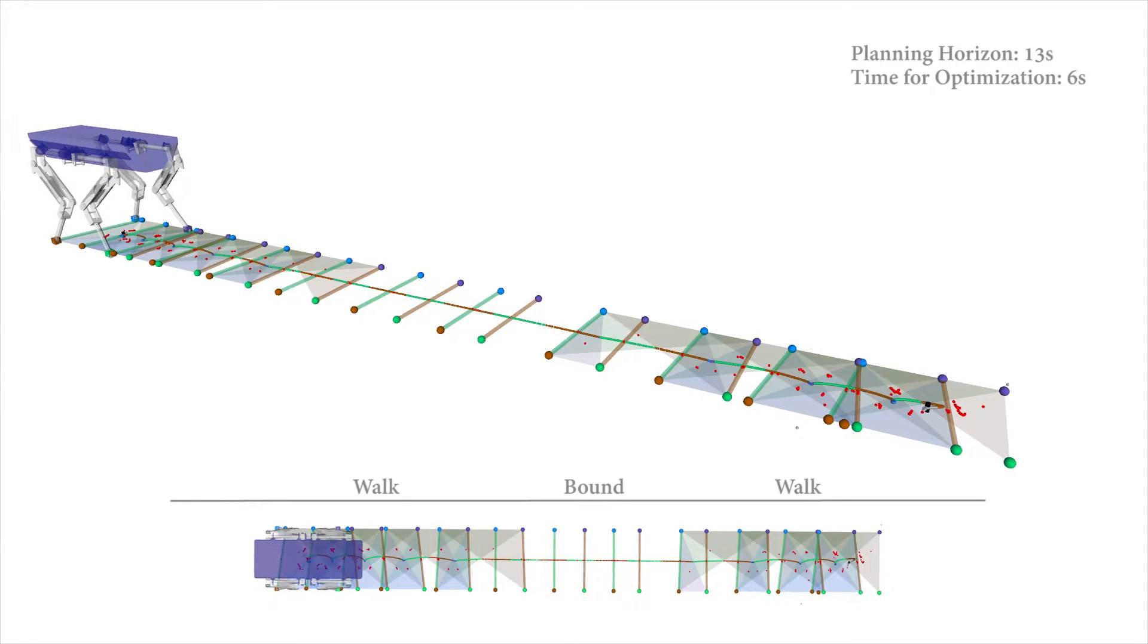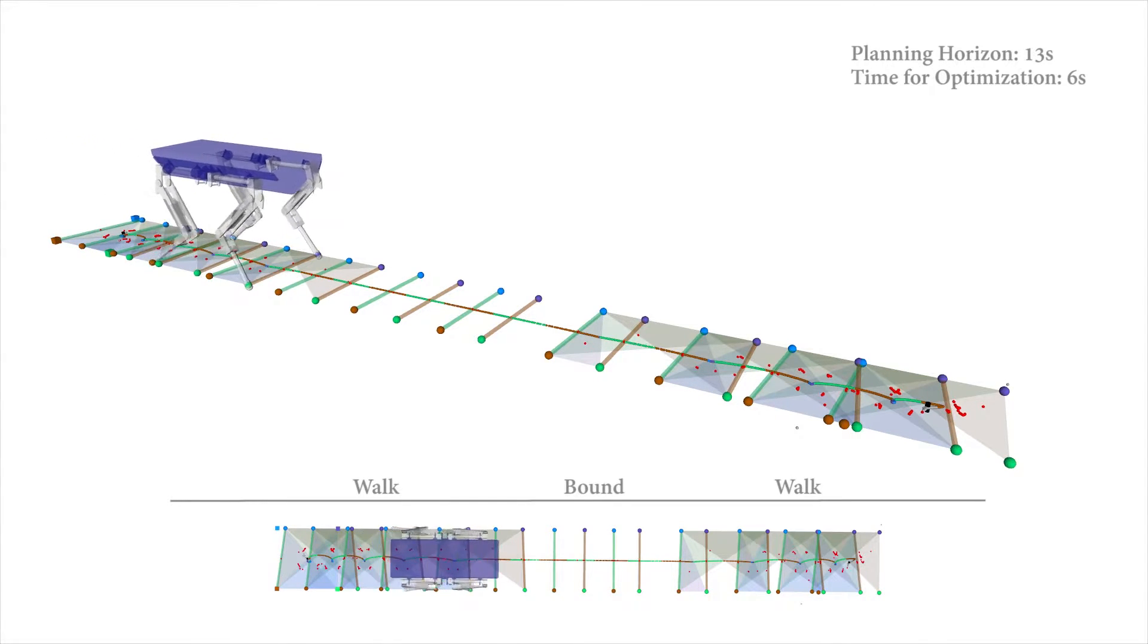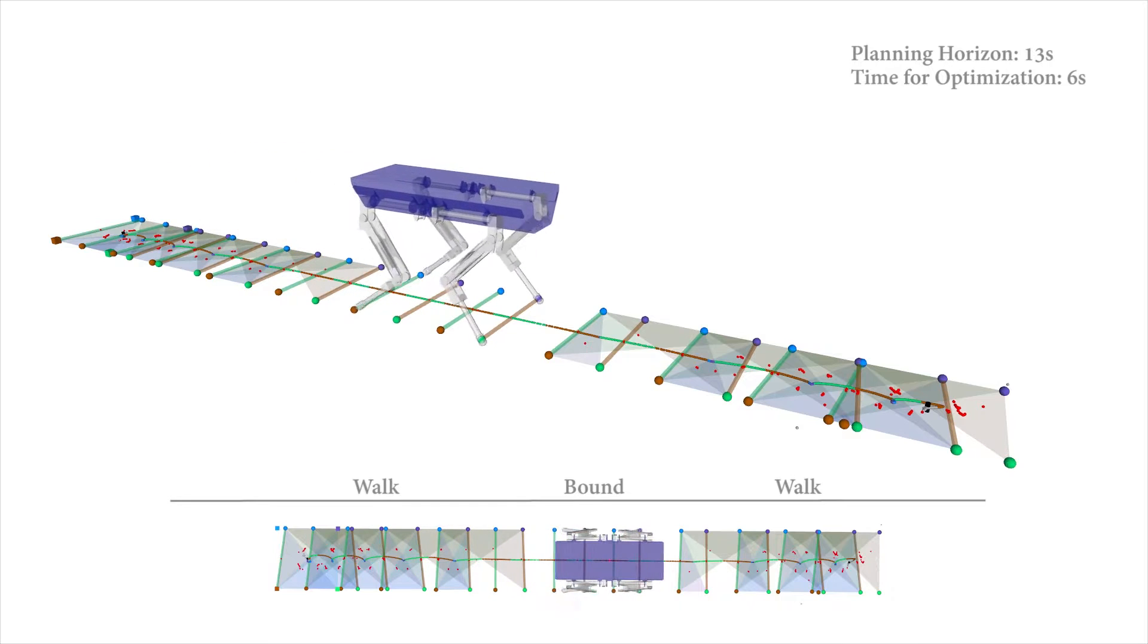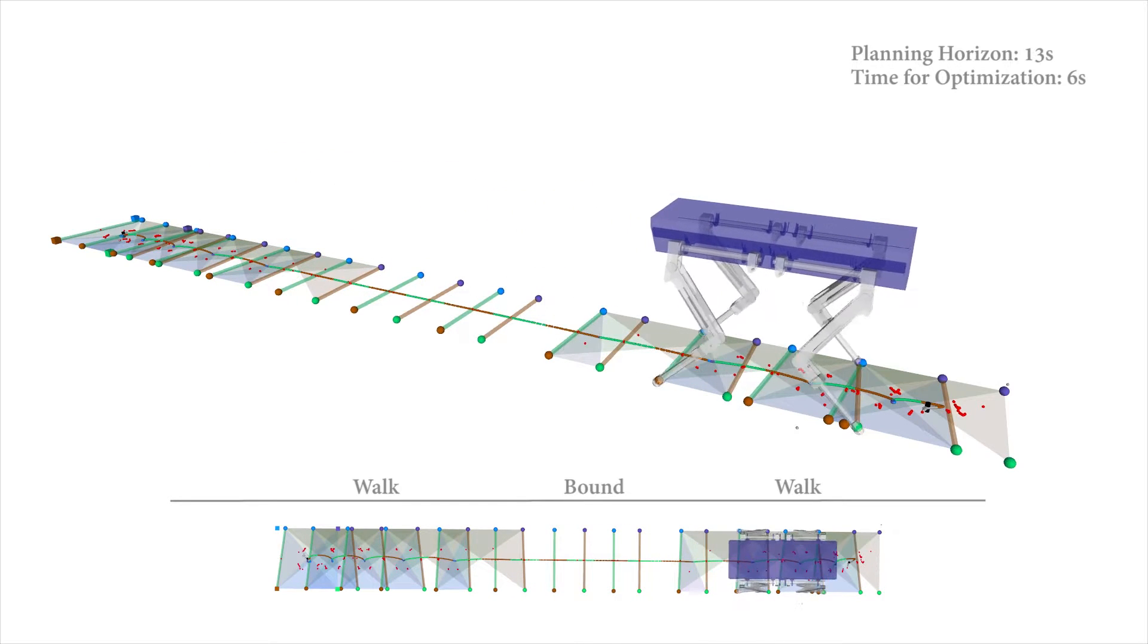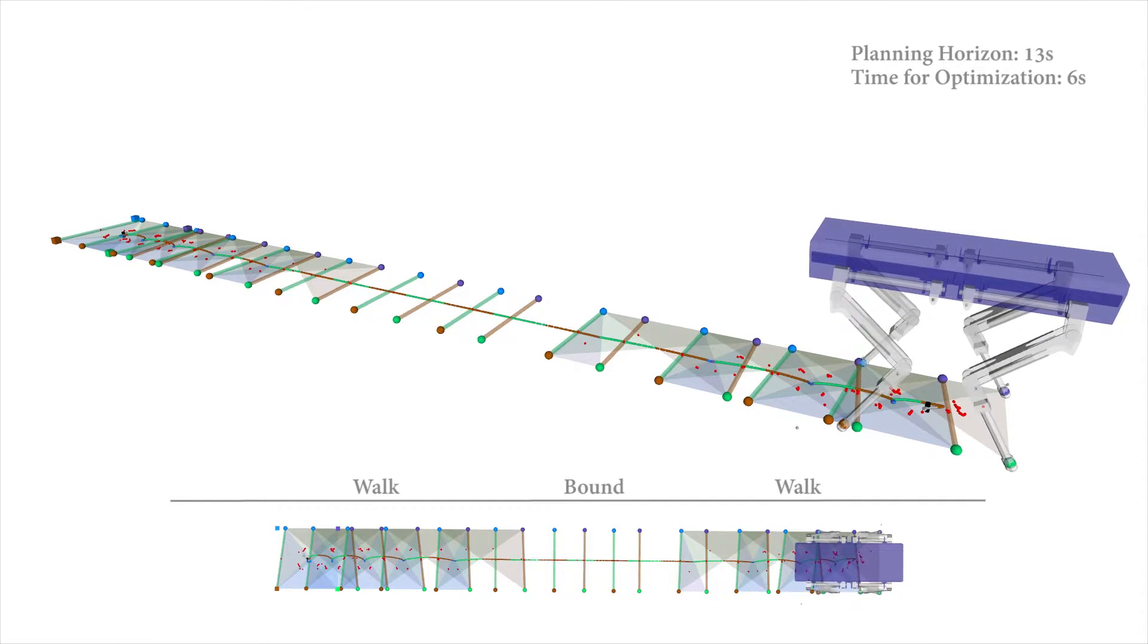Since the approach can handle support lines as well as support areas, transitions between these motions can also be generated. In this contact schedule, the swing phases of the front and hind legs are gradually overlapped, transitioning from walking to bounding.